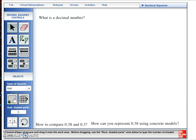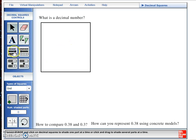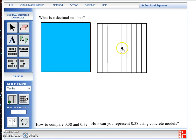When using decimal squares, there are three different types. The first is a unit square that when completely shaded represents one whole. The second is a tenths square that is partitioned into ten equal portions that when completely shaded in, also represents one whole.